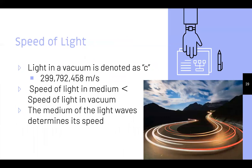What is the speed of light? Light in a vacuum is denoted as c and has a fixed value of 299,792,458 meters per second. The speed of light in a medium is less than the speed of light in a vacuum, and the medium through which light travels determines that speed. That's why the vacuum is faster.